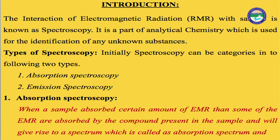Generally, spectroscopy is the branch of analytical chemistry which deals with the study of interaction of electromagnetic radiation with matter. Matter means any substance — the relationship of any substance with electromagnetic radiation is called spectroscopy. This is a type of analytical tool. When we want to identify a compound, we use different techniques such as qualitative analysis and quantitative analysis.